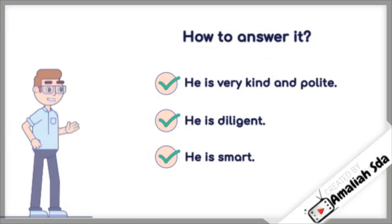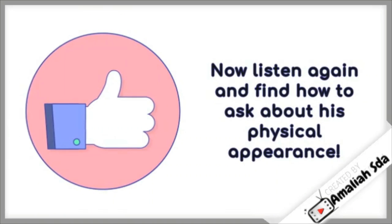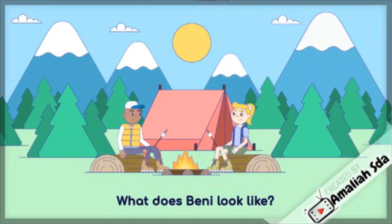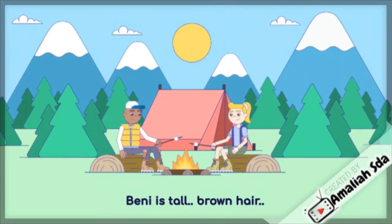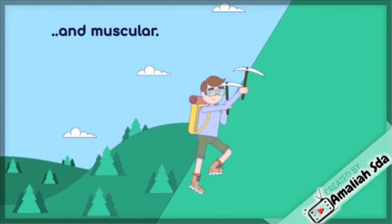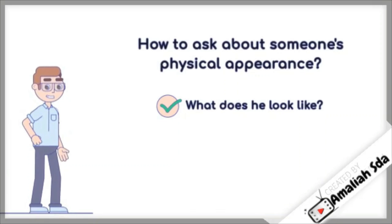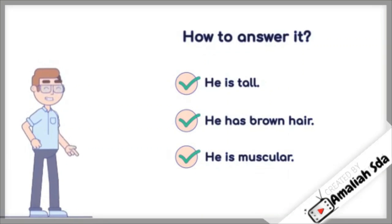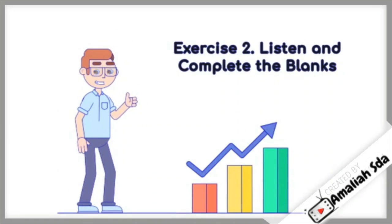Now listen again and find how to ask about his physical appearance: 'What does Benny look like?' How to ask about someone's physical appearance: 'What does he look like?' How to answer: 'He is tall. He has brown hair. He is muscular.' Exercise two: listen and complete the blanks.